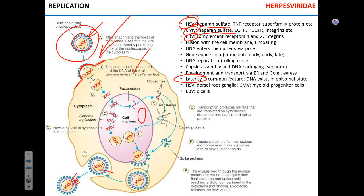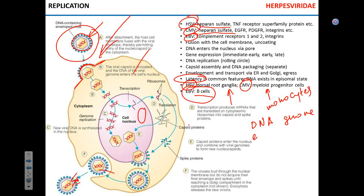Different herpes viruses establish latency in different places: herpes simplex establishes latency in the ganglia of sensory nerves; CMV establishes latency in monocytes; Epstein-Barr virus establishes latency in B cells. Common features of all herpes viruses: they all have a DNA genome, they are all enveloped, and they can all establish latency.